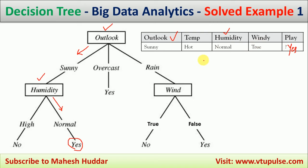We built the optimal decision tree using the CART algorithm and predicted the class label for the new example. I hope the concept is clear. If you have any questions, ask in the comment box. If you like this video, do like and share with your friends, press the subscribe button for more videos and the bell icon for regular updates. Thank you for watching.